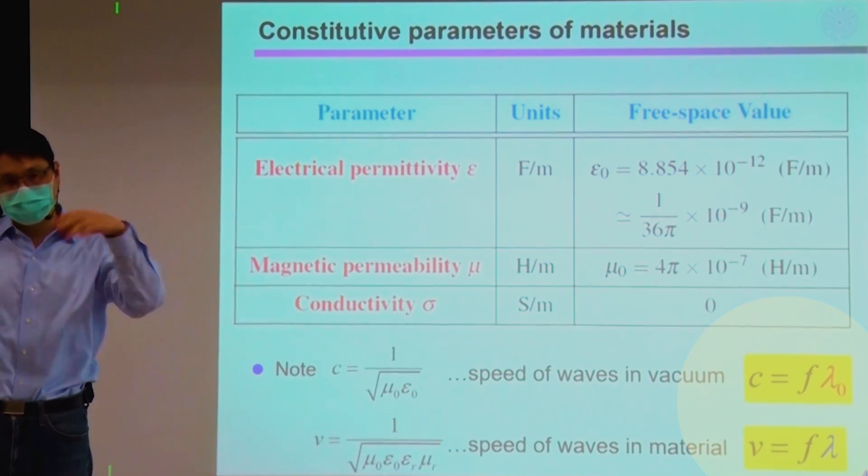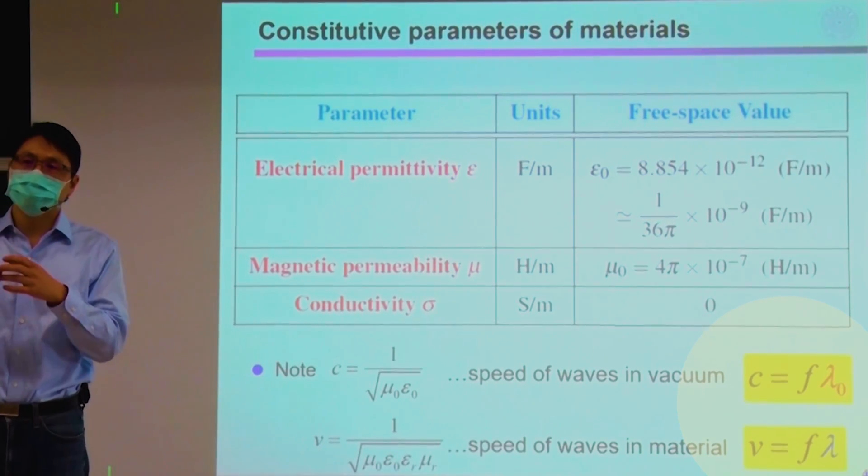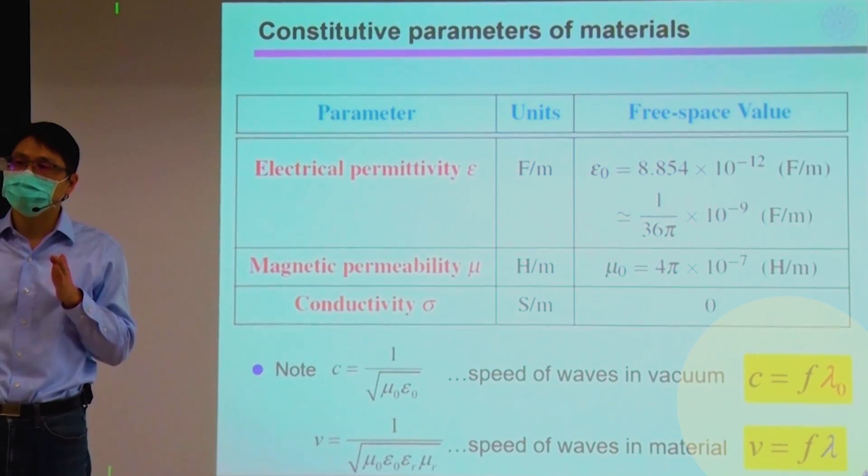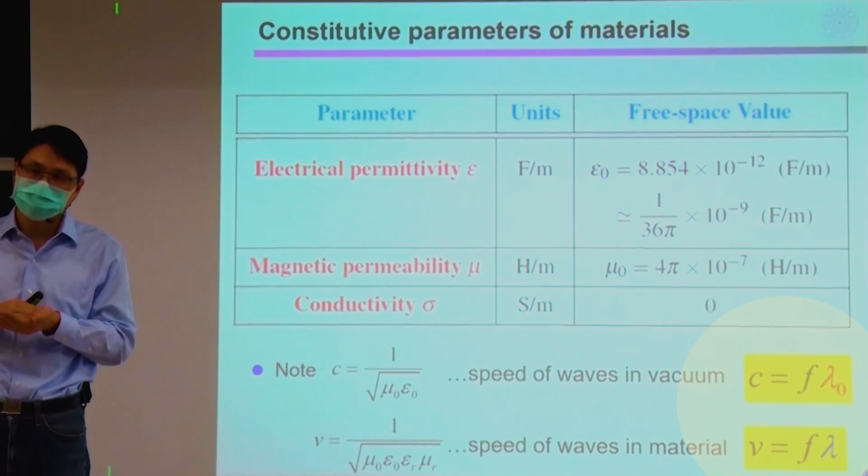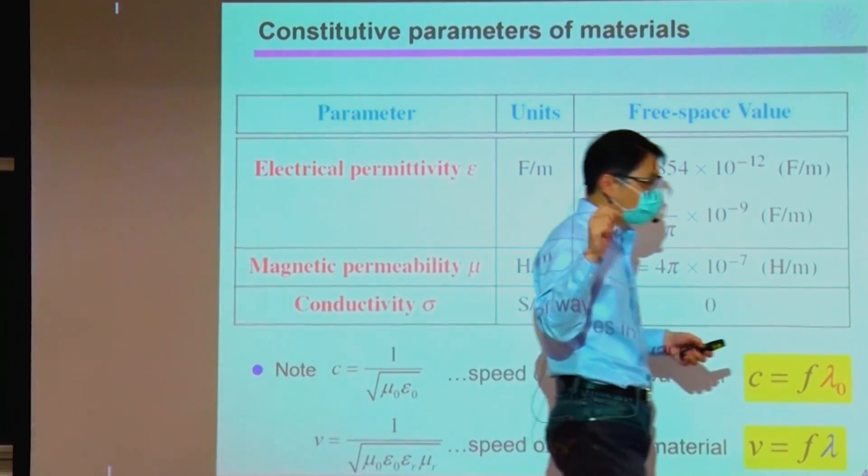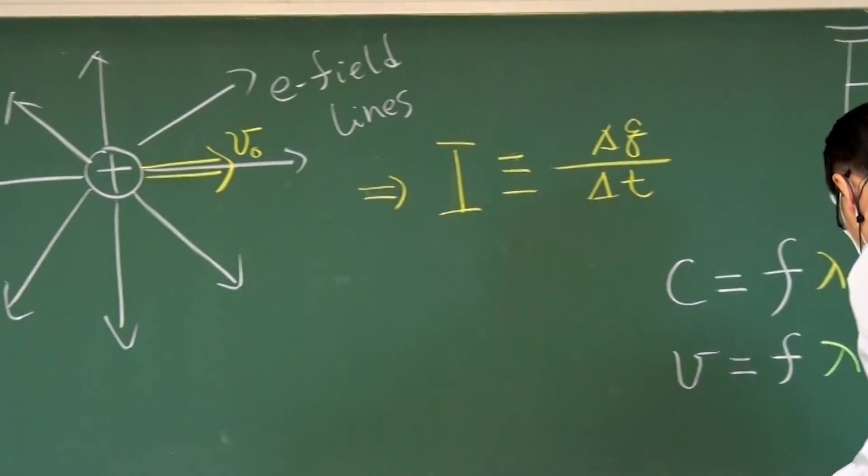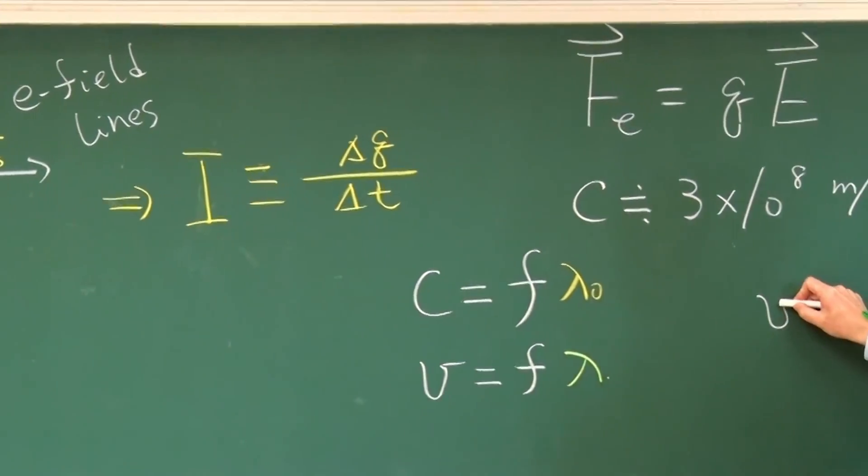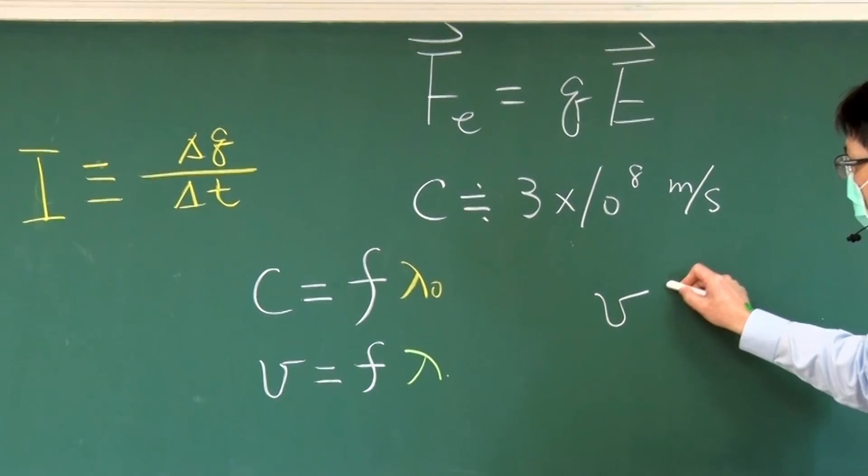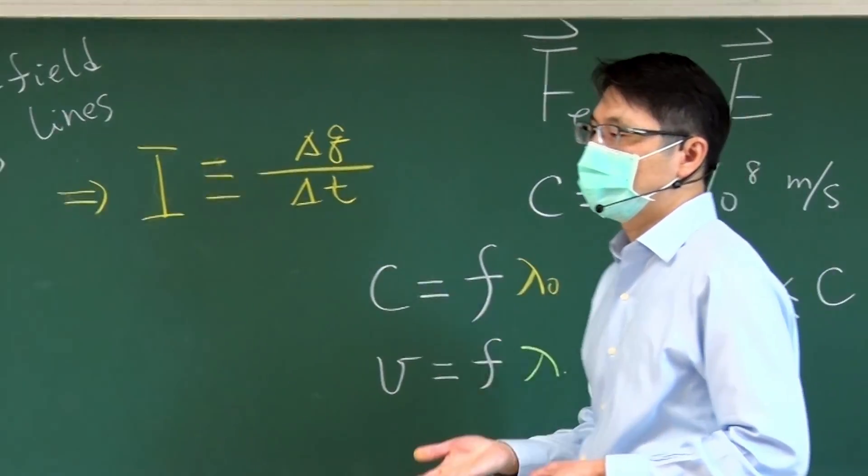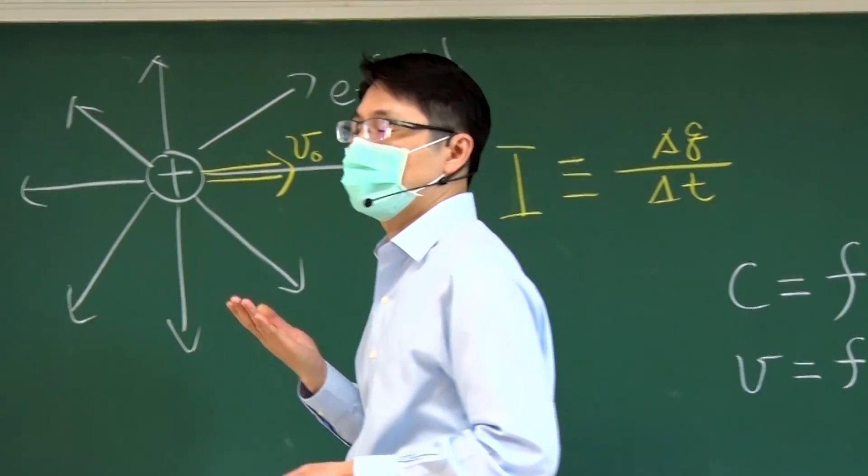If you have something, so you can no longer have vacuum, the speed of light would be reduced. So something you can write, you should write, is V is somehow smaller or equal to C.